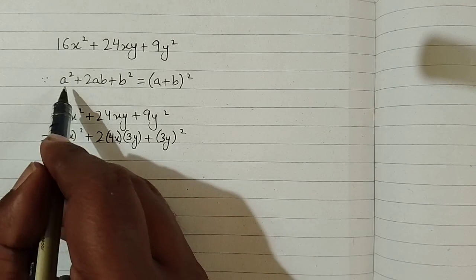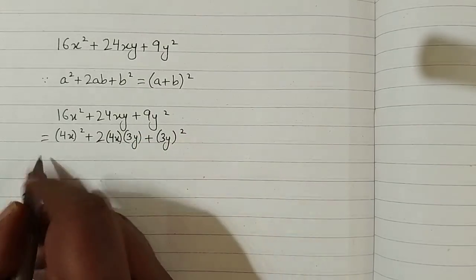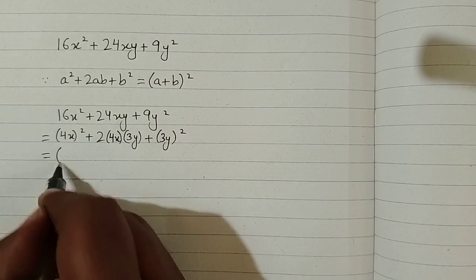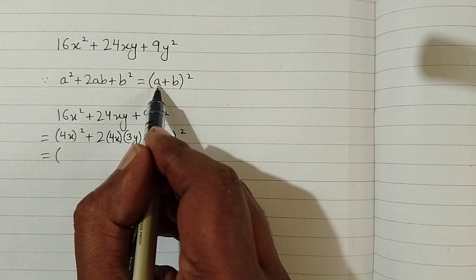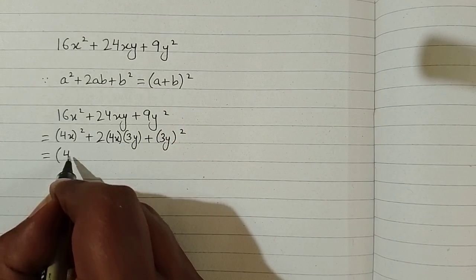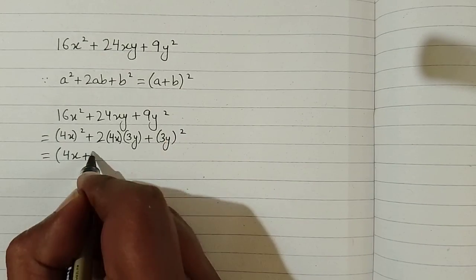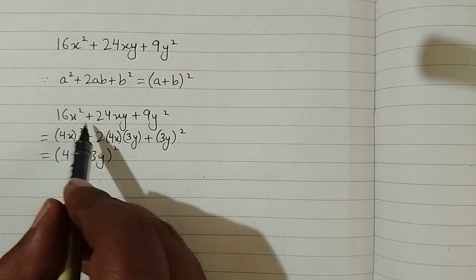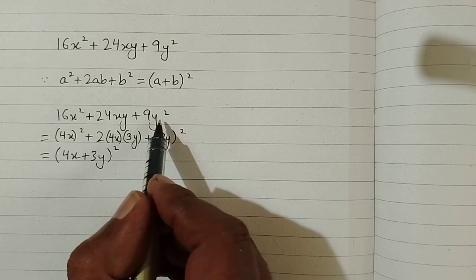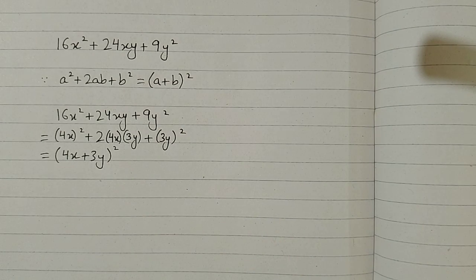Now we have the formula a² + 2ab + b² = (a + b)². We put the value of a here, so we put 4x in place of a. In place of b we put 3y, so we have (4x + 3y)². Therefore, 16x² + 24xy + 9y² = (4x + 3y)².